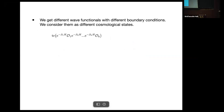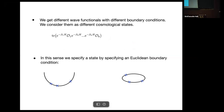We can have many different initial conditions and boundary conditions, giving different wave functionals with different boundary conditions — and we consider them as different states of this closed universe. We specify a state by specifying a Euclidean boundary condition, analogous to how the thermofield double state is specified. Here, we specify a state by doing something analogous to that.